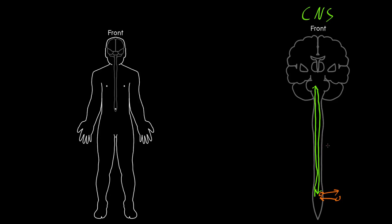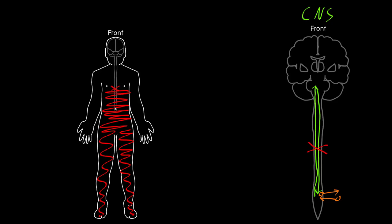If you get a complete lesion of the spinal cord somewhere, you're going to disconnect all those axons below that lesion from the brain up above. So all that sensory, motor, and autonomic information traveling in axons in the nerves is not going to be able to connect up to the brain. For a lesion about halfway up the spinal cord, all the parts of the torso and the limbs below that lesion are going to have abnormalities of sensory, motor, and autonomic functions from information that can't get past that lesion to connect to the brain above.